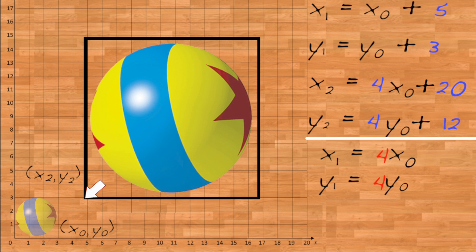So algebraically, x2 equals x1 plus 5, which equals 4 times x0 plus 5. And y2 equals y1 plus 3, which equals 4 times y0 plus 3.